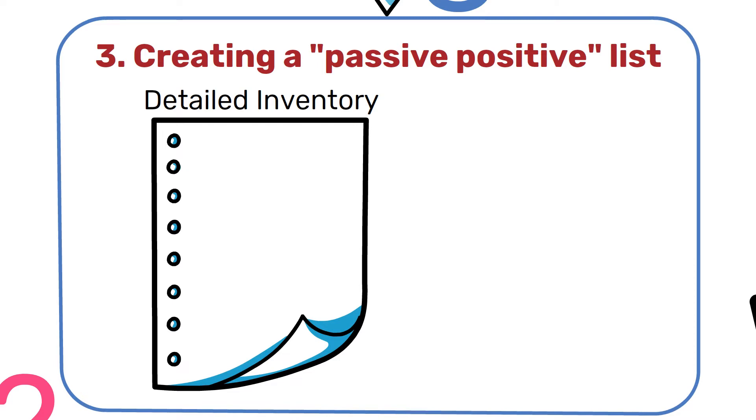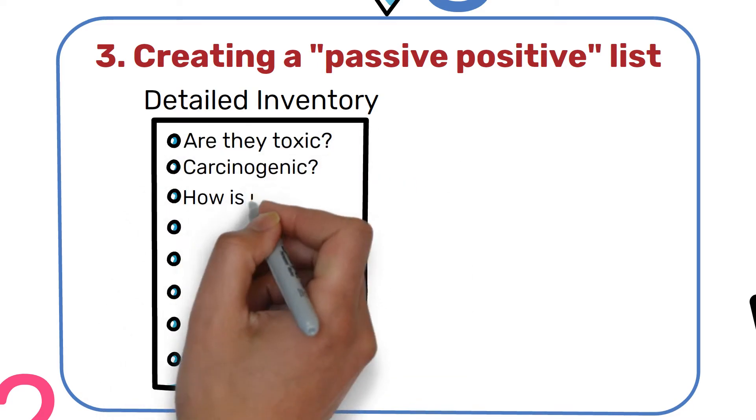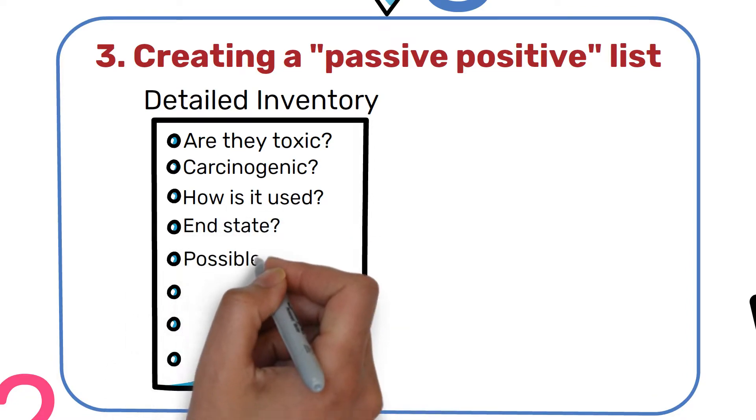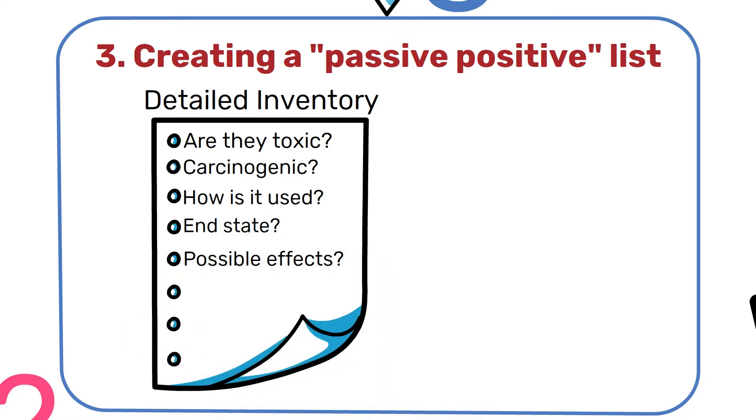The questions we ask here are: Are they toxic? May be carcinogenic? How is the product used and what is its end state? What are the effects on the local and global communities? Once screened, substances are placed on the following lists that assign greater or less urgency to problematic substances.